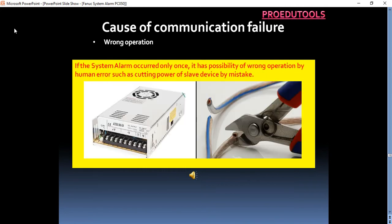Wrong operation. If the system alarm occurred only once, it has possibility of wrong operation by human error such as cutting power of slave device by mistake.